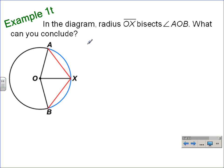The first thing that we conclude is that angle AOX, a central angle, is congruent to angle BOX, and that would be because of the angle bisector theorem.